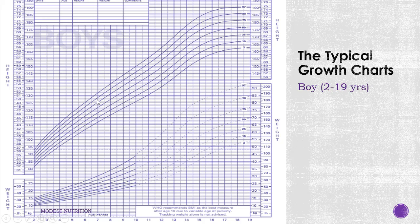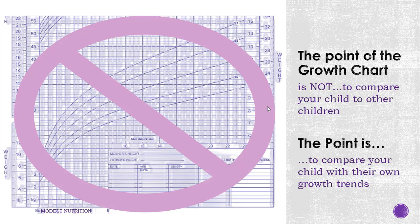The lines here represent how most children of this age group grow. The line in the middle represents the 50th percentile. That means that 50% of children of this age range weigh this much. Although these charts represent the growth of other children in the age group, the point of it is not to compare your child to other children. The point is actually to see the trends in your own child's growth.